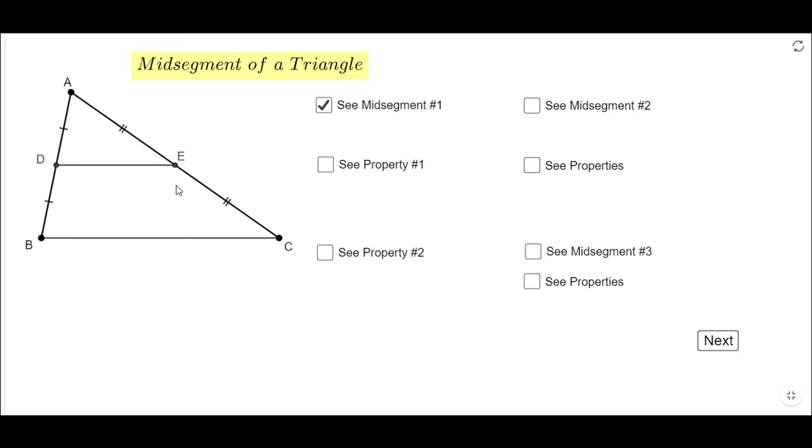You notice also AE is congruent to EC. And the first property of this midsegment DE is that it is half of the third segment of the triangle. In this case, BC. You notice BC is 8, DE is 4.